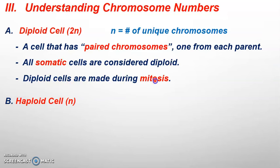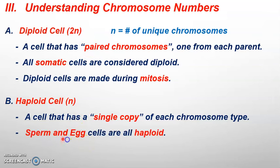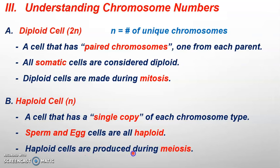Diploid cells are only made during mitosis. Haploid cells are considered to be just n — half the potential total genetic information. Our haploid cells, our sperm and egg, are just going to be n, meaning they will only have 23 chromosomes in each one. They're not going to have a pair of chromosomes; they're going to have just one single copy of each chromosome type. The n value for sperm or egg will be 23, while a human diploid 2n value would equal 46. Haploid cells are made during the process of meiosis.